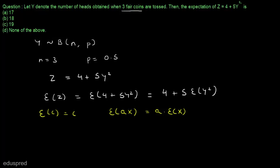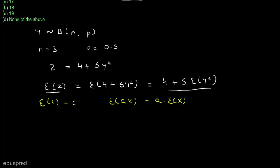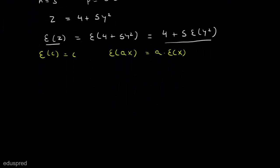So the expected value of Z is equal to 4 plus 5 times the expected value of Y squared. To find the expected value of Z, we first have to find the expected value of Y squared. To do that, we need to find the possible values that Y squared can take, and for that we first need the values that Y can take.